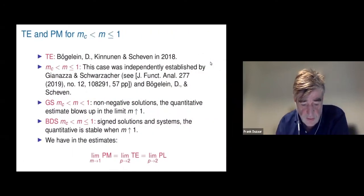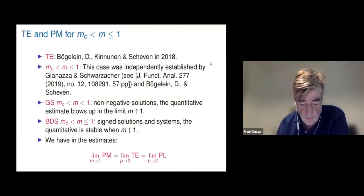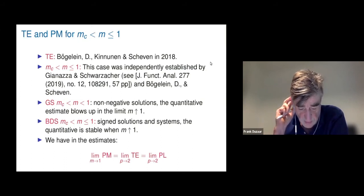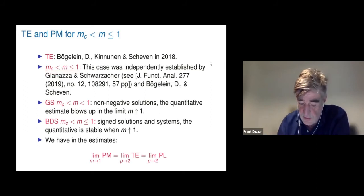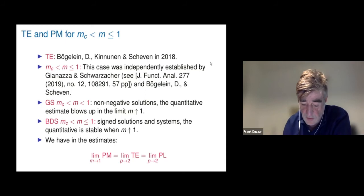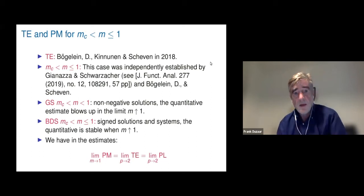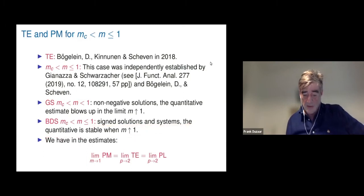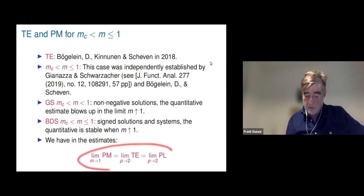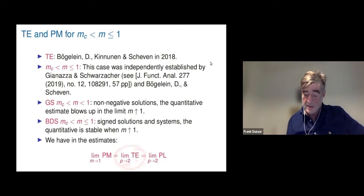For the Trudinger equation and porous medium in the singular case, Janata-Schwarzacher also proved higher integrability at the same time, again for non-negative solutions with quantitative estimates blowing up as m → 1. Our results cover sign-changing solutions and systems, our estimates are stable, and for m → 1 in porous medium we recover the same estimate as for Trudinger with p → 2 and for the parabolic p-Laplacian with p → 2.